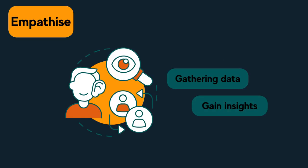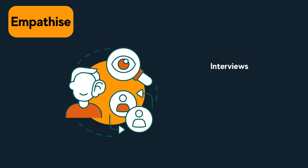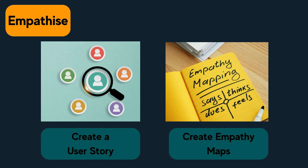The first step is to empathise. In this stage you are investigating the needs and perspectives of the people who you're designing for by gathering data. This helps build empathy for the end user and to gain new insights into the problem you're trying to solve. Some ways of gathering data could include interviews, surveys, observations, or collecting secondary research from studies or reports. From this data you could create user stories or empathy maps to bring to life the experiences and needs of your typical user or the many different users and their different needs.